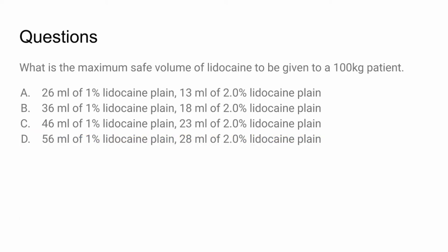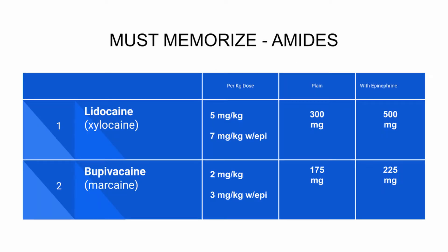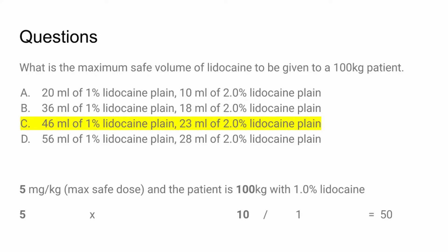Let's try again with a 100 kilogram patient. We've memorized lidocaine plain is 5 mg/kg. So we multiply 5 times 10 (not 100), then divide by the percentage. That gives us approximately 50 milliliters — more precisely 46 milliliters of 1% lidocaine plain. We can halve that to get the 2% dose, which gives us 23 milliliters of 2% lidocaine plain.